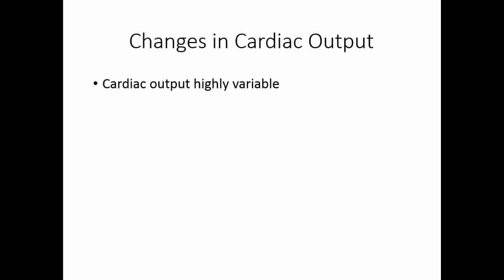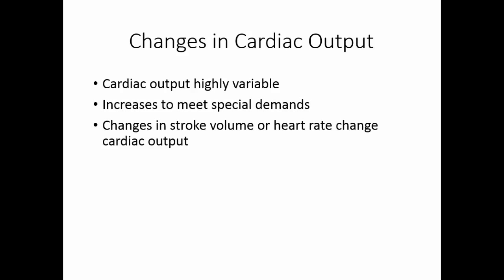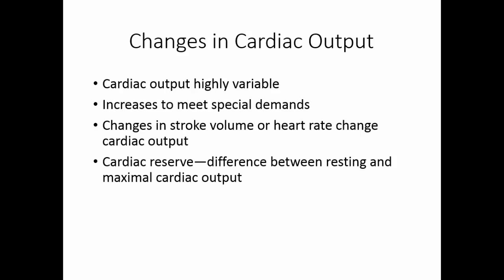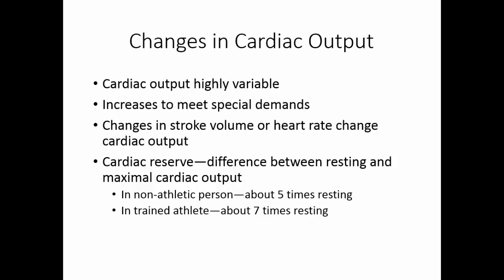Cardiac output is highly variable and must increase to meet special demands like exercise. Changes in stroke volume or heart rate will change cardiac output. Cardiac reserve is the difference between resting cardiac output and maximal cardiac output. In a non-athletic person, cardiac reserve is about 5 times the resting rate; in a well-trained athlete, it is about 7 times the resting cardiac output.